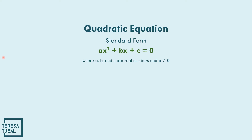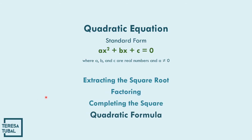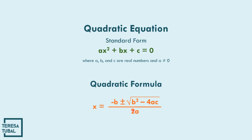There are lots of ways in solving a quadratic equation. First, extracting the square roots. Second, factoring. Third, completing the square. And our lesson for today is the quadratic formula. The formula is: X equals negative B plus or minus the square root of B squared minus 4AC, all over 2A.